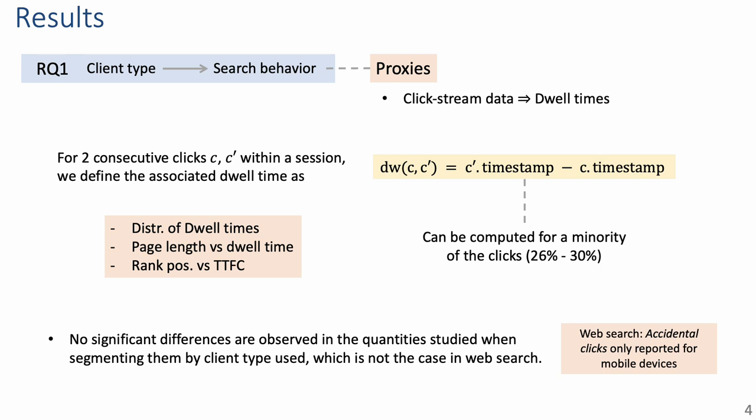Related to dwell time computation, in our datasets we observed that many sessions are single-clicked, and thus we cannot compute dwell times for those. The main observation here is that for the analyzed variables I introduced earlier, which are also shown inside the orange rectangle on the slide, we did not see any significant difference in the results when segmenting them by client type, which we know is not the case in web search, as we will see later in the talk.